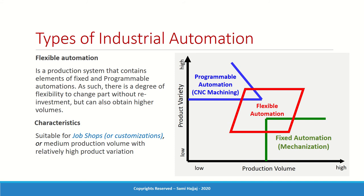Regardless of the type of automation, the key element is always the production volume — it has to pay back for the cost. Factories are businesses whose purpose is to make money and profit. If you don't have enough volume, you cannot justify the cost of automation. The production has to be sold, and from the proceeds you pay your costs and profit.